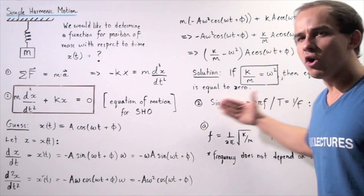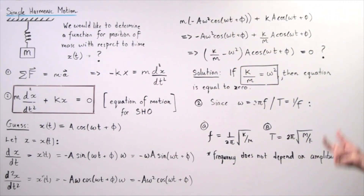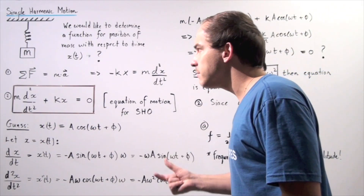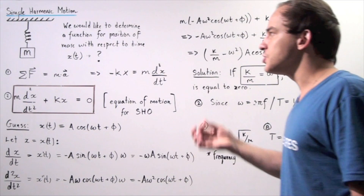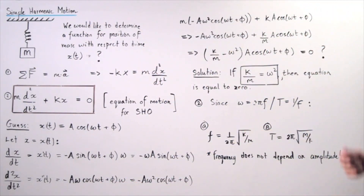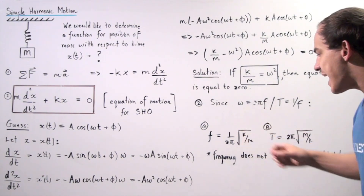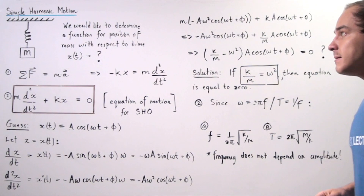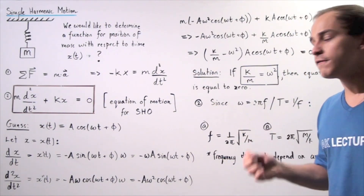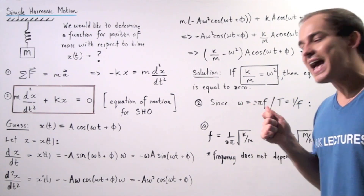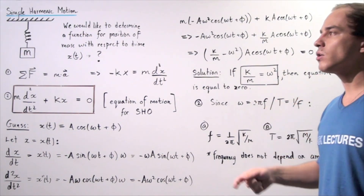This equation is important because it tells us that the frequency and period of our oscillating object do not depend on the amplitude — that is, the maximum displacement. If we increase or decrease the amplitude, the frequency and period remain the same. What does affect the frequency and period is changing k, the stiffness of the spring, or m, the mass of the object. The period and frequency depend on mass and spring stiffness, but not on the amplitude of oscillation.